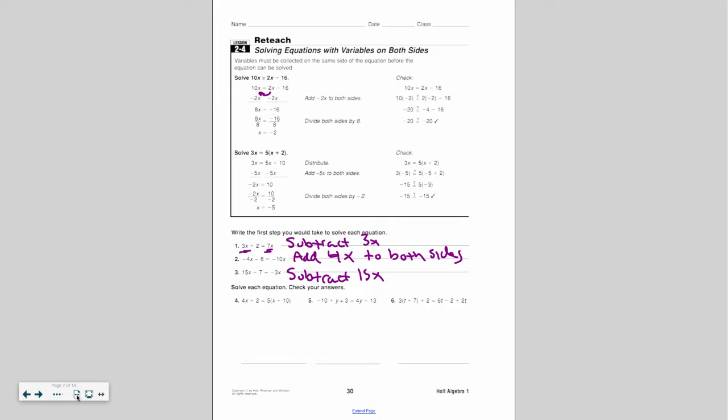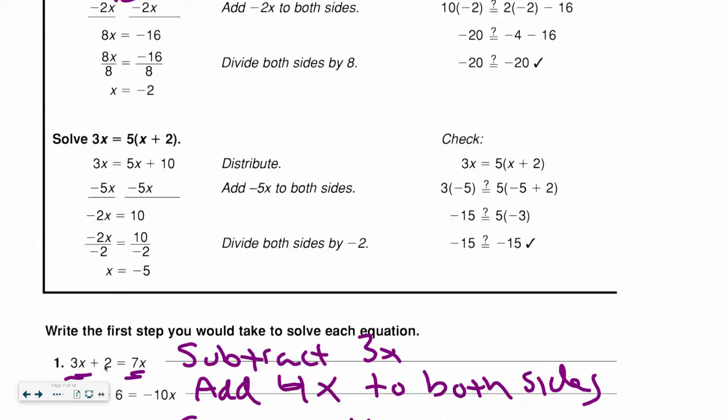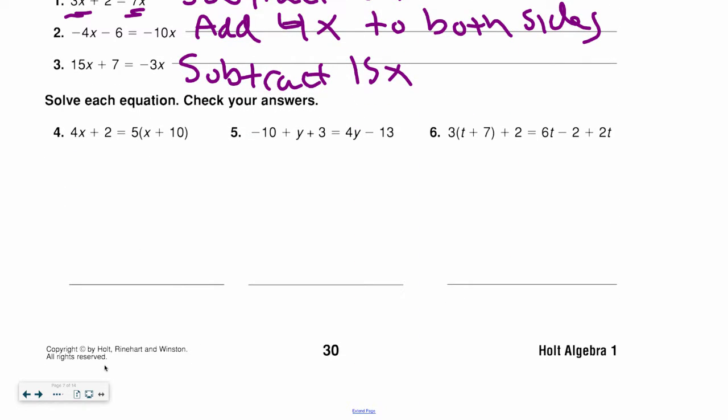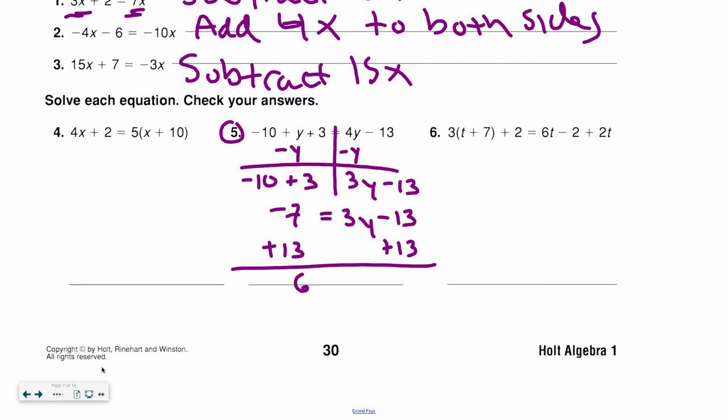For the bottom ones, we have to remember the distributive property. So 5, I want to run through real quick. It doesn't have the distributive property, but it does have variables on both sides. So remember when I'm moving one variable from one side to another, I'm always changing its sign. I can then combine any numbers that are left. So the negative 10 and the 3 were negative 7. I add 13 on both sides, then divide by 3, and I have my y.